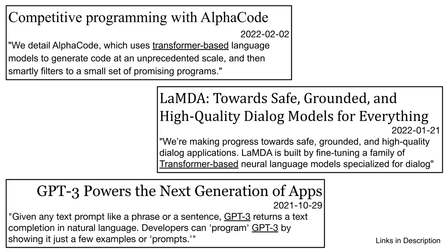Many recent breakthroughs in machine learning have featured transformer models. In the past few months, DeepMind's AlphaGo generated working computer programs, and Google's Lambda project demonstrated high-quality, truth-based conversations. GPT-3, where the T stands for transformer, has also been popular for bringing dialogue capabilities to other apps in a modular way.